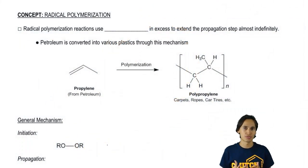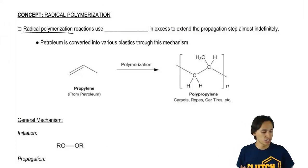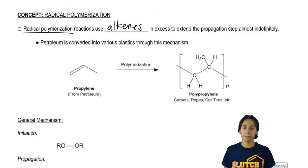So what I want to go over right now is just the general mechanism for these polymerization reactions. And it is radical-intermediated. Radical polymerization reactions use alkenes in excess to extend the propagation step.